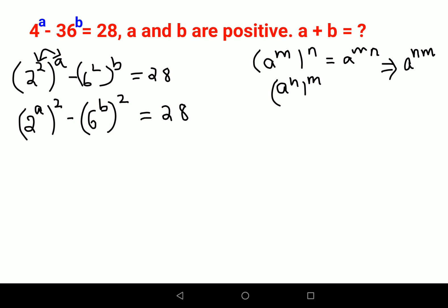Now here, we remember the law of indices where a square minus b square can be expanded as a plus b into a minus b. So here also I can write this as 2 raised to a plus 6 raised to b, multiplied by 2 raised to a minus 6 raised to b, is equal to 28.